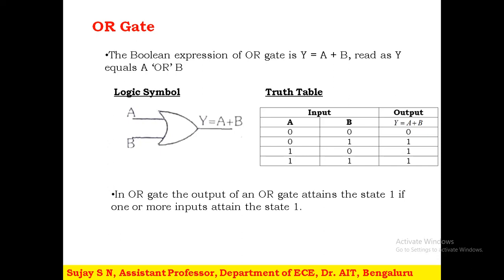The OR gate gives output 1 when A is 1 and B is 0, or when A is 1 and B is 1. At least one of the inputs should be 1 for the OR gate to give output 1. When A is 0 and B is 0, the output is 0. The OR gate provides output 1 even when all inputs are 1. So A should be 1 or at least B should be 1.